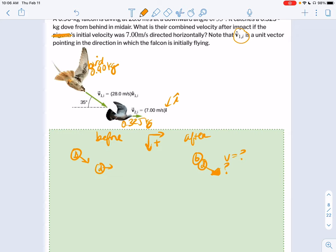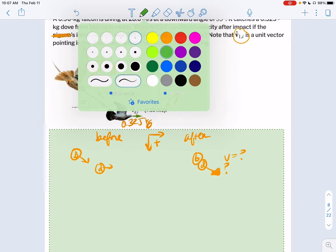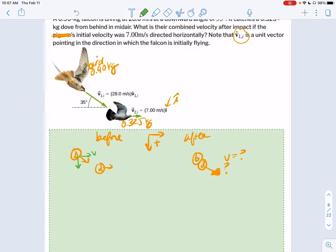Since they're going to catch and stick together, this is going to be inelastic, which is going to make this a little easier. He is going to have VBX and VBY and that's just going to be VDX. And then afterwards they'll just have VX and VY. We just leave off the subscript because they're both together. All right, so I'm going to set up two conservation of momentum equations.